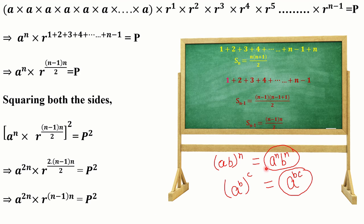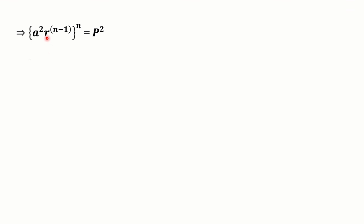Now using the reverse rule — a^n × b^n = (ab)^n — since both terms have the same power n, we can pull n out to write P² = (a² × r^(n-1))^n. Then, a² means a × a, so we take these two terms together.